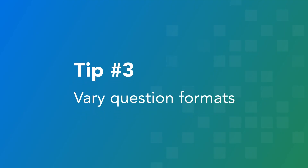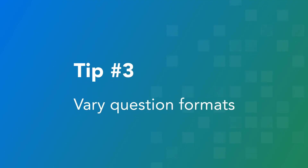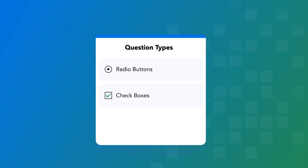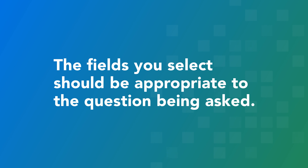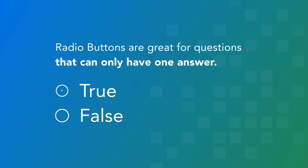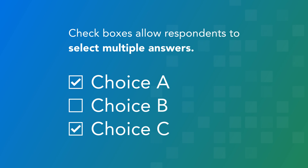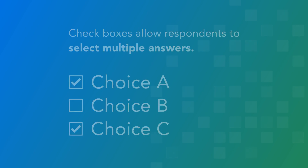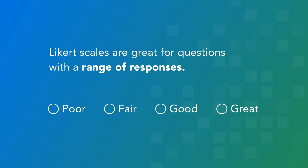The third tip is to vary question formats. Question types like radio buttons, checkboxes, and the Likert scale will help keep your respondents engaged as they take your survey. The fields you select should be appropriate to the question being asked. Radio buttons are great for a response that can only have one answer, like yes or no questions. Checkboxes are great for questions in which users can select more than one answer. Likert scales are great for questions that could have a range of responses, typically used for questions involving emotional ratings or frequency of an activity.